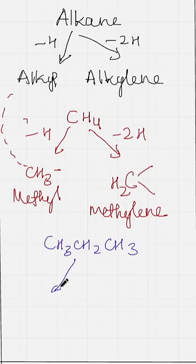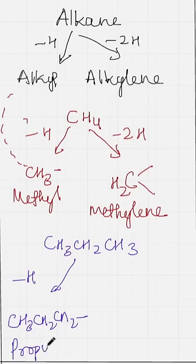So if you remove one hydrogen from propane you will get propyl. CH3, CH2, CH2. This is known as propyl, that is alkyl.